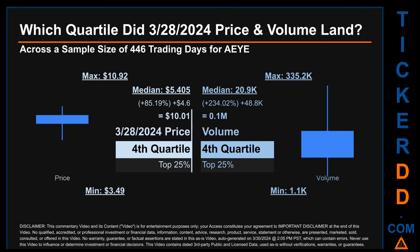Hello, my name is Maria. Which quartile did March 28, 2024 price and volume land in across a sample size of 446 trading days? The maximum end-of-day price was $10.92 while the minimum was $3.49. Within that price range, March 28, 2024's price of $10.01 landed within the fourth quartile, meaning it was within the top 25% of all sampled end-of-day prices. The day's volume also landed within the fourth quartile, marking it within the top 25% of all sampled daily volume, which saw a max of 335,200 and a minimum of 1,100.